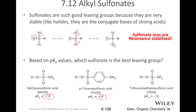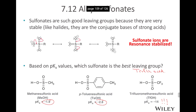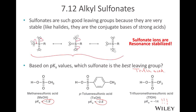Trifluoromethane sulfonic acid — sometimes referred to as triflic acid — has a pKa of −14, which is really acidic. So if you look at these as leaving groups — the mesylate, the tosylate, and the triflate — the leaving groups are going to be the conjugate bases of strong acids. The conjugate base of a strong acid makes a good leaving group, just like iodide, bromide, or chloride. They're stabilized through resonance structures and by delocalizing the negative charge onto electronegative oxygen atoms — that is why sulfonates make such good leaving groups.